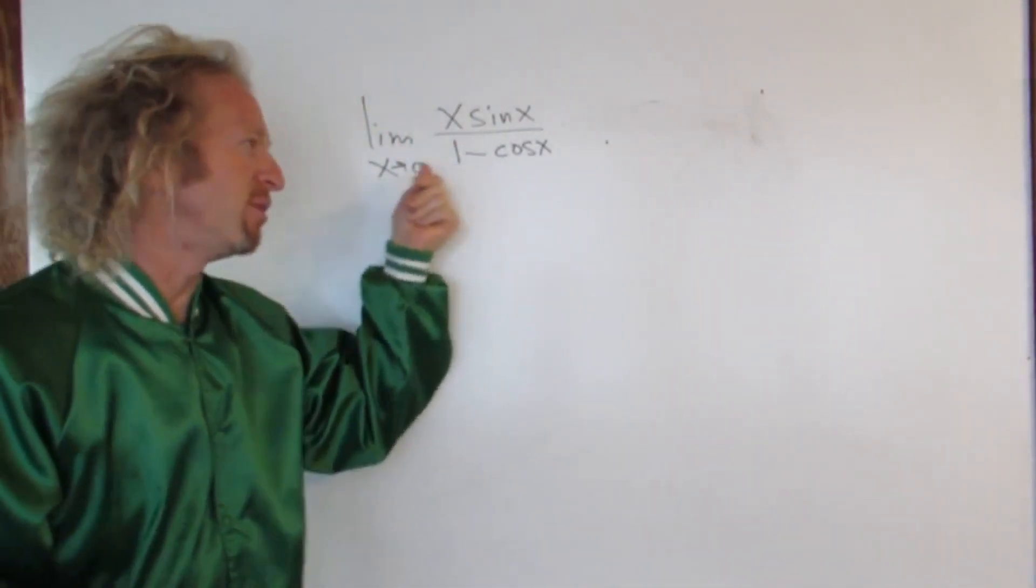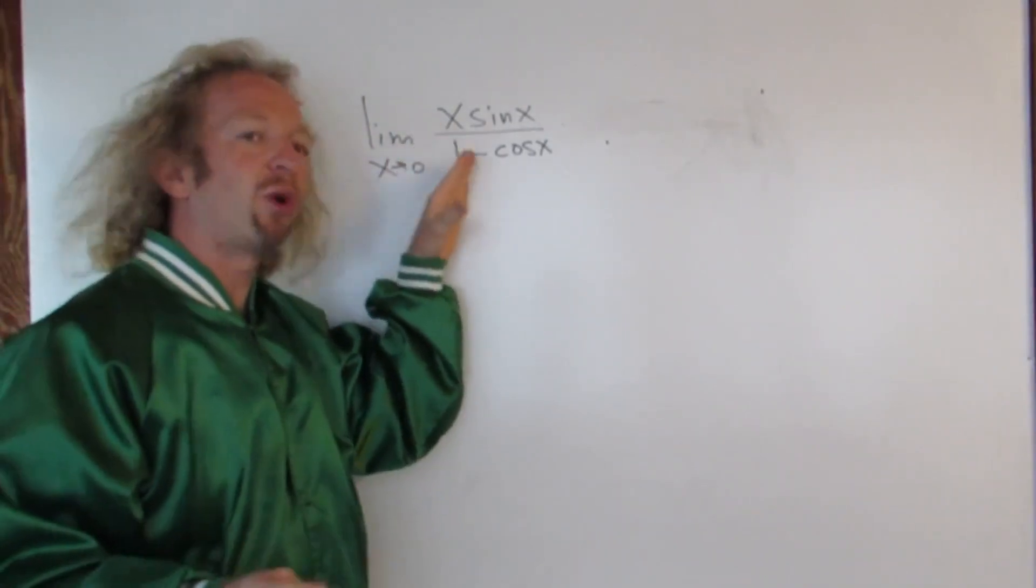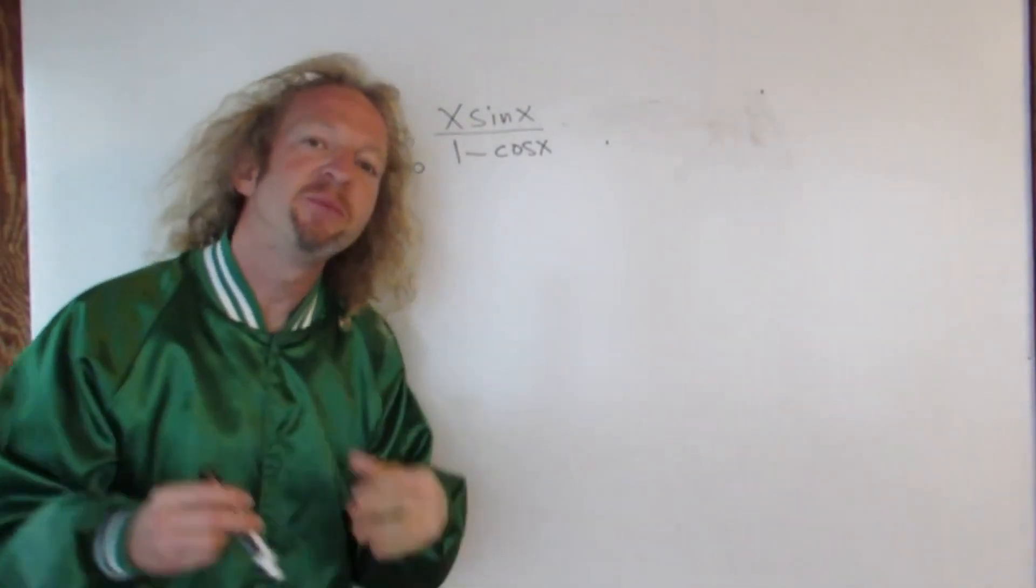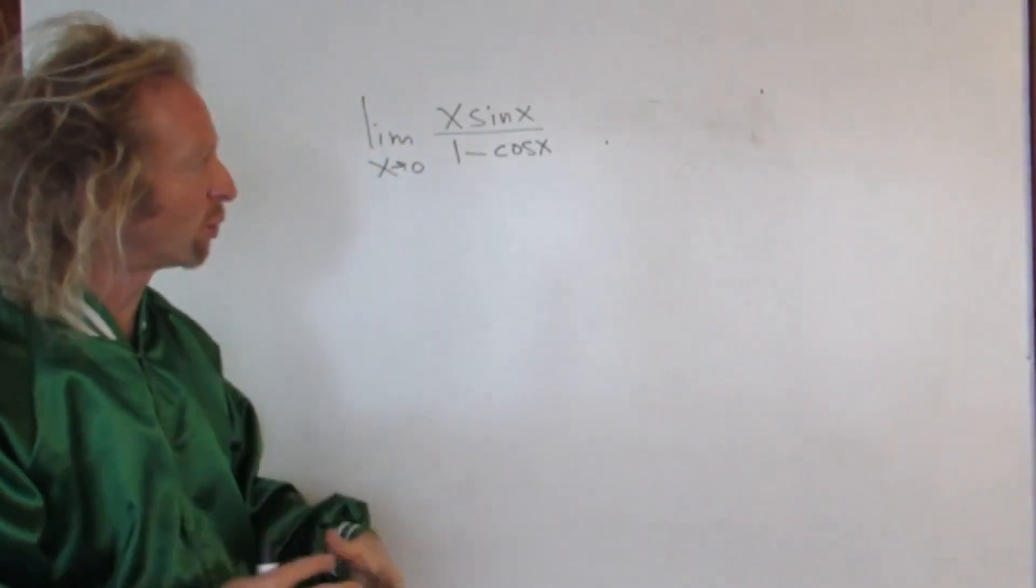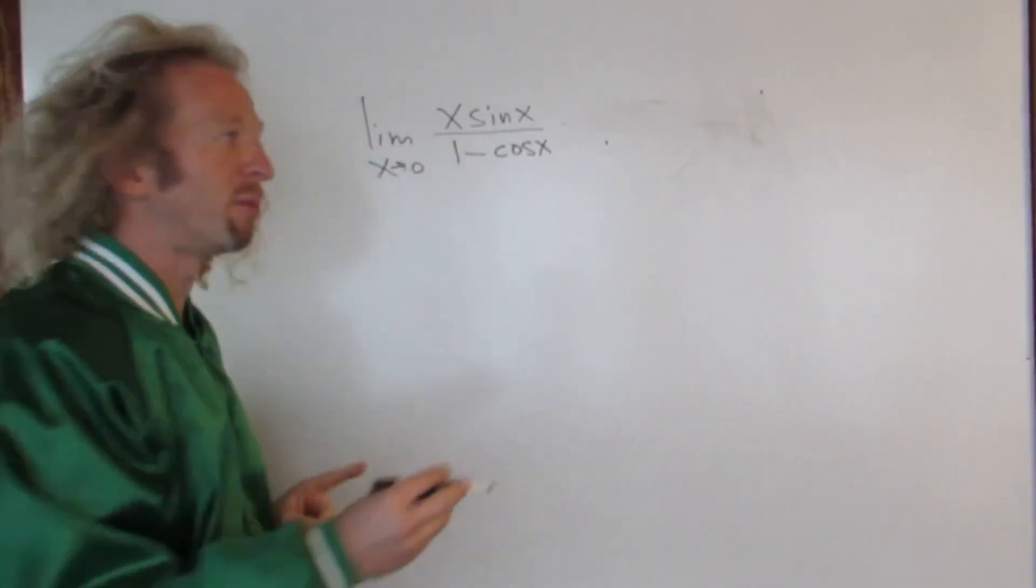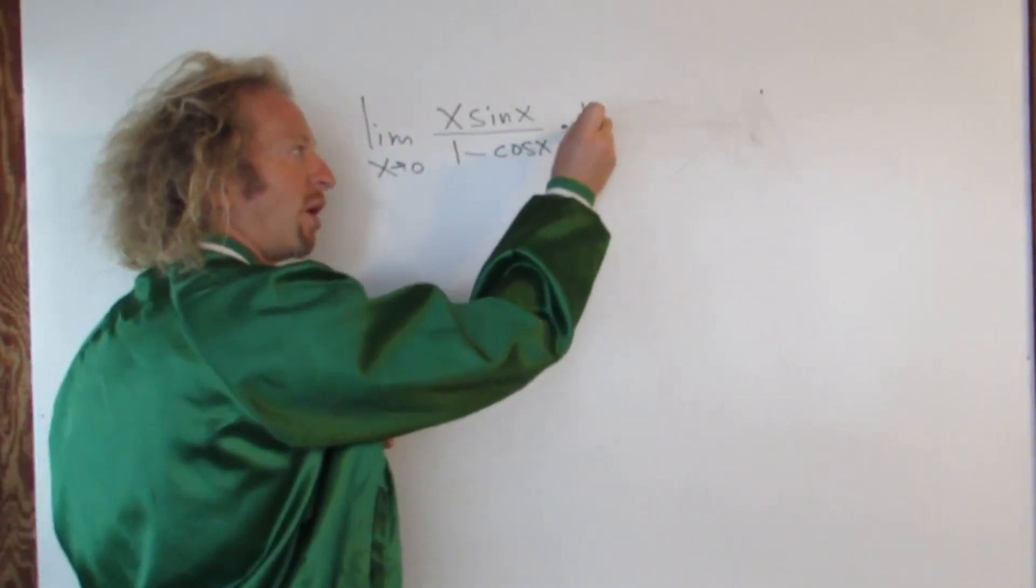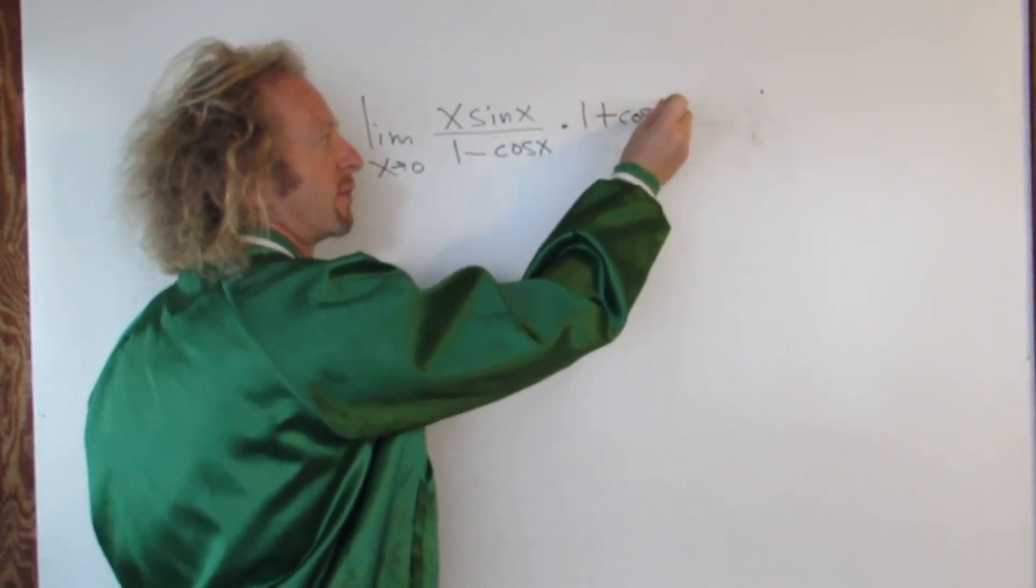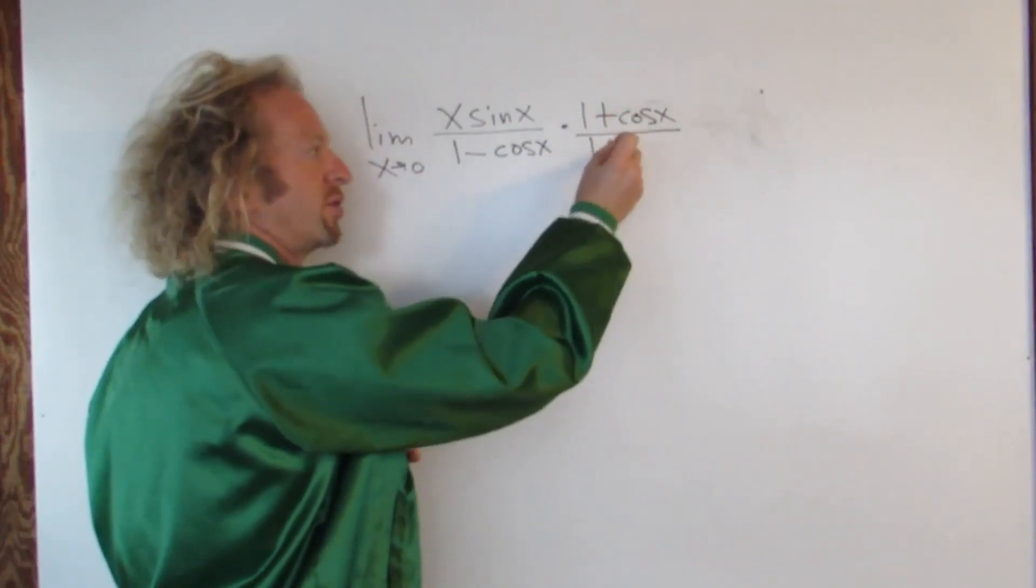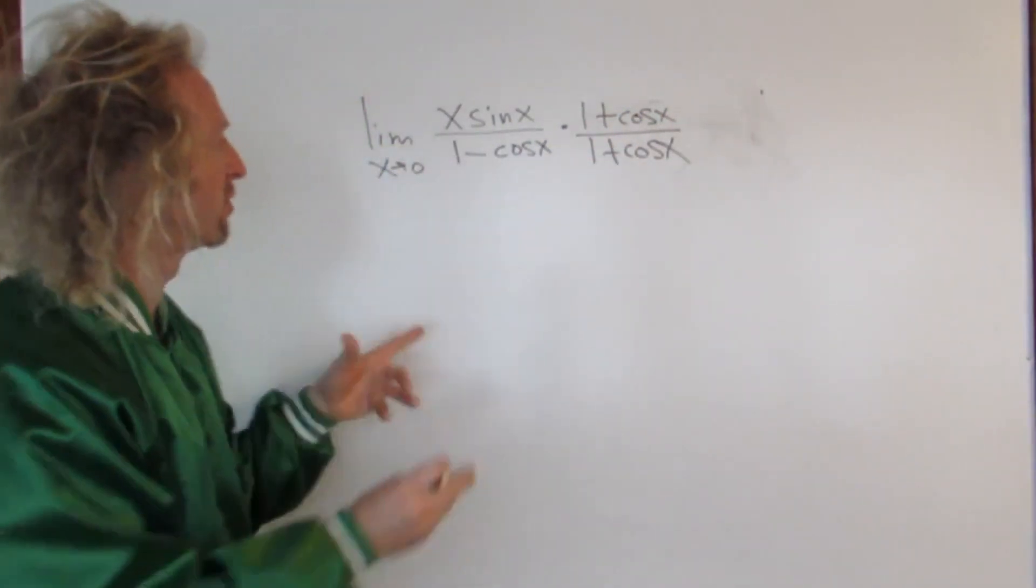When you look at this, on the bottom you have 1 minus cosine x. So you might think it would be really nice if it was 1 minus cosine squared of x, because then you can use one of the identities. So what you can do is multiply by the conjugate. You multiply by 1 plus cosine x over 1 plus cosine x. And when you do this, something really cool happens.